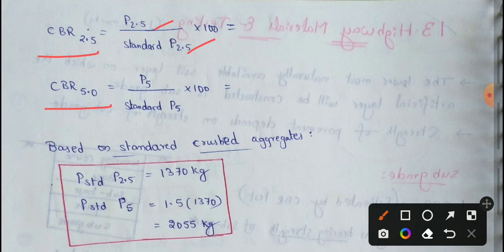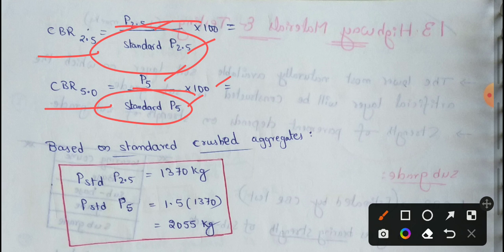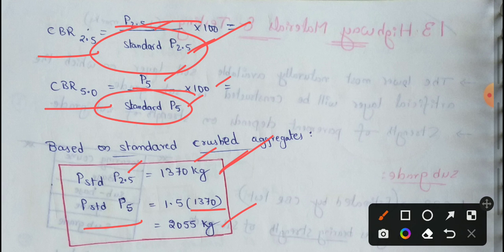The CBR 2.5 value equals P2.5 divided by the standard penetration value, multiplied by 100. The CBR 5.0 value equals P5.0 divided by the standard penetration value, multiplied by 100. Standard penetration values are provided as per IRC. The standard penetration value at 2.5 mm is 1370 kg, and at 5.0 mm it is 2055 kg.